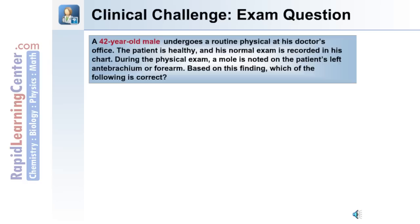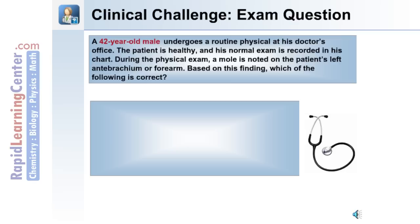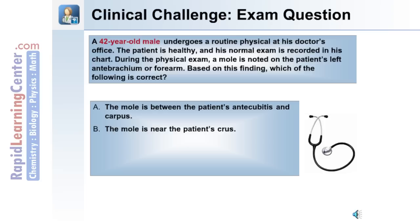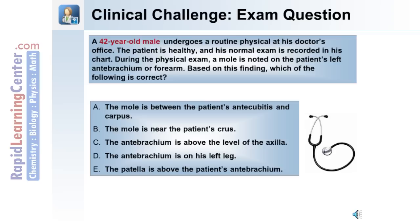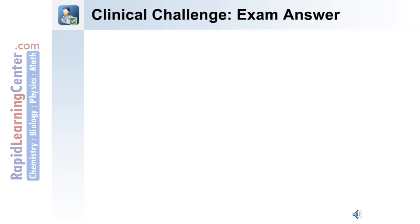Here's a clinical challenge exam question. A 42-year-old male undergoes a routine physical. The patient is healthy and his normal exam is recorded. During the physical exam, a mole is noted on the patient's left antebrachium or forearm. Based on this finding, which of the following is correct? A) The mole is between the patient's antecubitus and carpus. B) The mole is near the patient's crus. C) The antebrachium is above the level of the axilla. D) The antebrachium is on his left leg. E) The patella is above the patient's antebrachium.